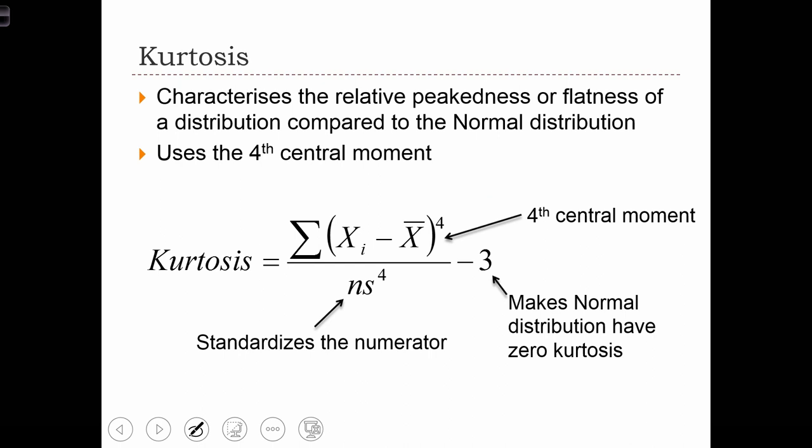The numerator of the kurtosis statistic is the fourth central moment, the sum of the deviations to the power of 4. The denominator standardizes the value of the numerator.